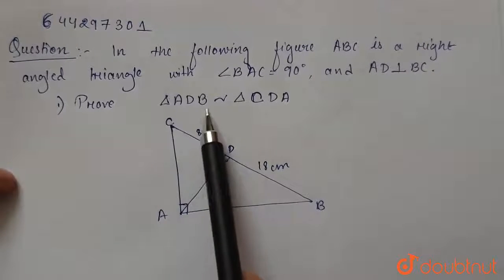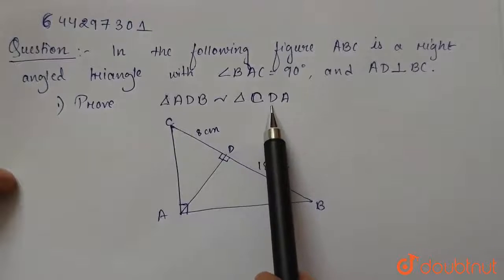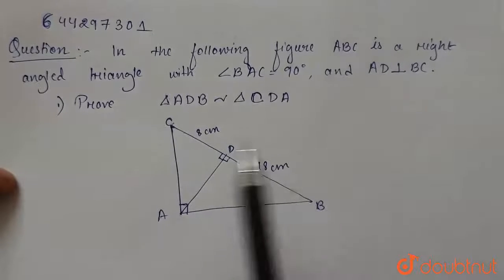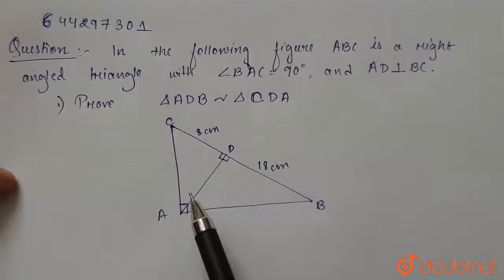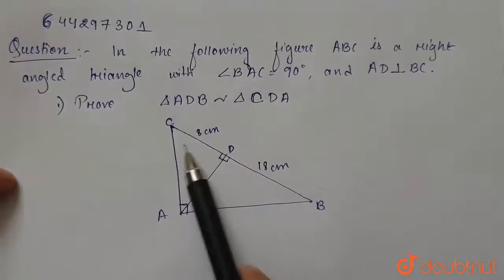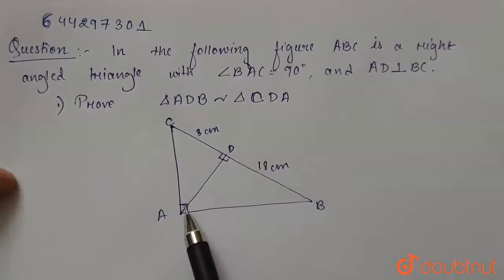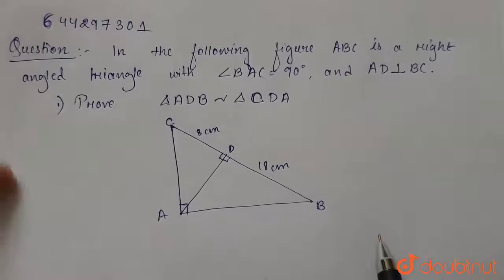Prove triangle ADB is similar to triangle CDA. So this is our triangle ADB and this is our triangle CDA. We are given AD perpendicular to BC and also angle BAC equals 90 degrees. Let's start with our solution.